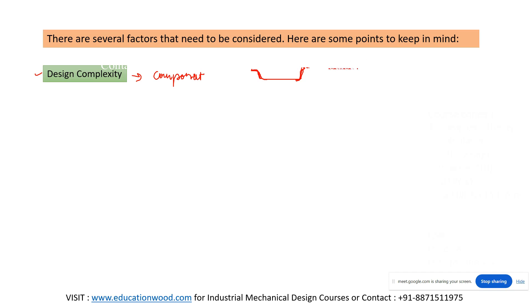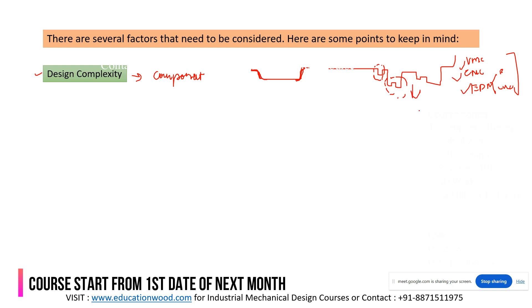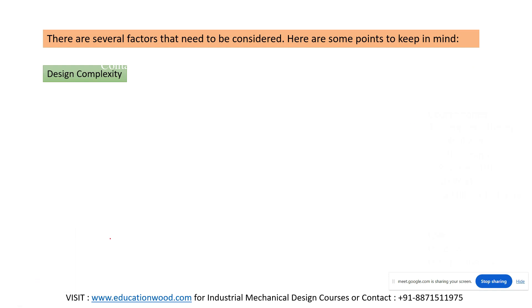But if you have a component with complex geometry, sharp edges, then in order to manufacture this type of cavity we need VMC, CNC, wire cut EDM, electrode EDM — to get precise dimensions and features we need these costly methods. Because of that, manufacturing cost will be high. So first of all we have to consider the design complexity.